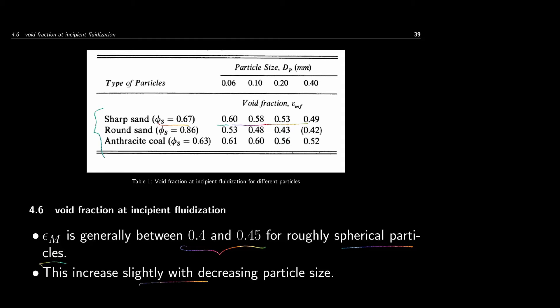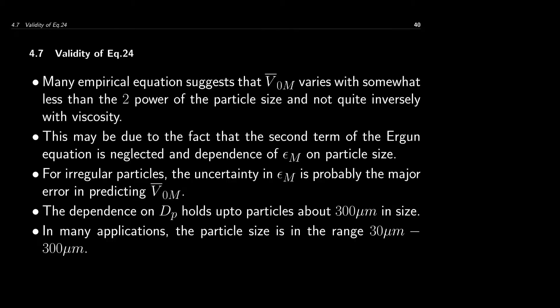However, for the laminar flow case, experimental data suggests that the v_mf estimated using that equation is not quite proportional to the second power of particle size, nor quite inversely proportional to viscosity. This may be caused because the second term in the Ergun equation was neglected. For irregular particles, the uncertainty in epsilon_m is probably the major source of error in predicting the minimum fluidization velocity.